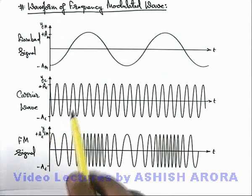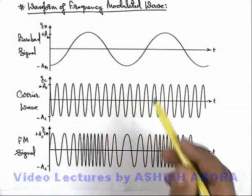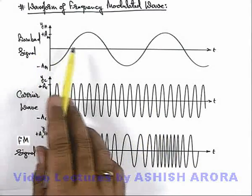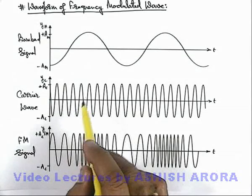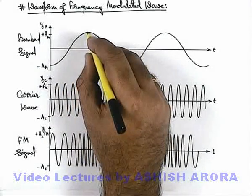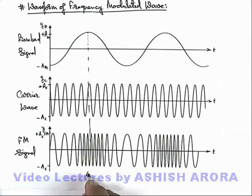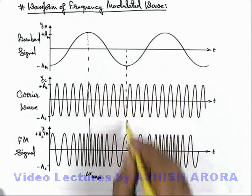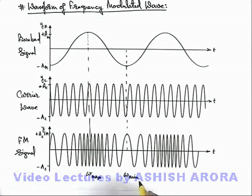Let us now understand the waveform of the frequency modulated wave. As discussed, the information contained in the baseband signal is imposed on the frequency of the carrier wave. Here you can see that at the point where the displacement of the baseband signal is maximum, the frequency of the frequency modulated signal is also maximum. And at the points where the displacement of the baseband signal is minimum, the frequency of the frequency modulated signal is minimum. This is how the frequency varies in the FM signal.